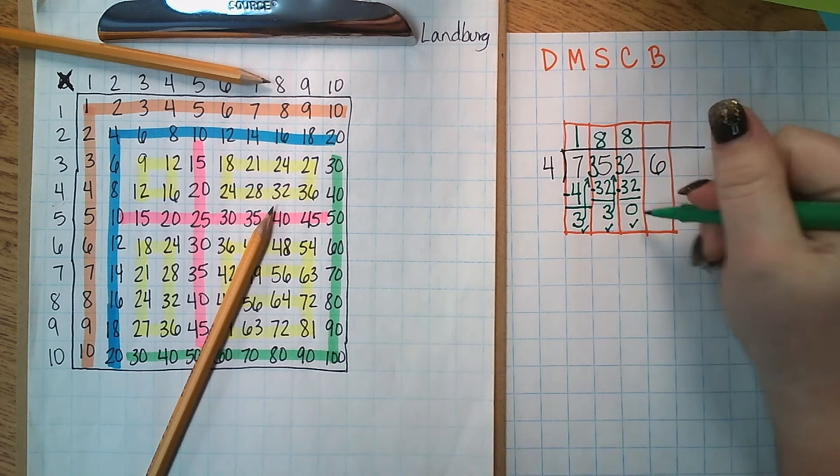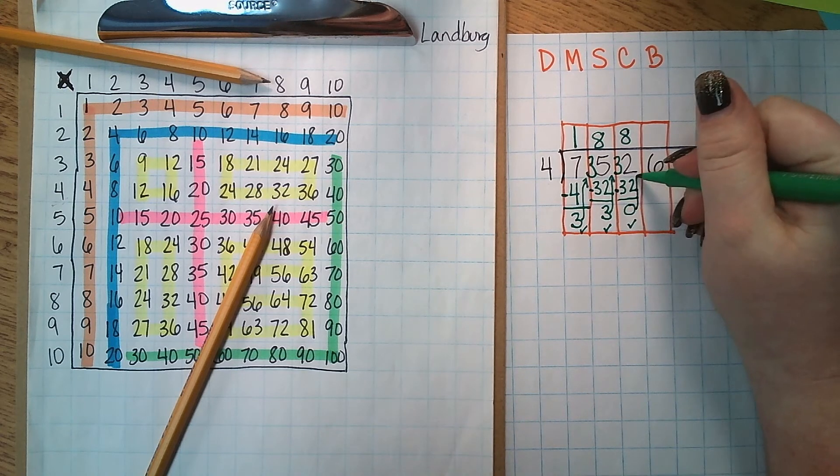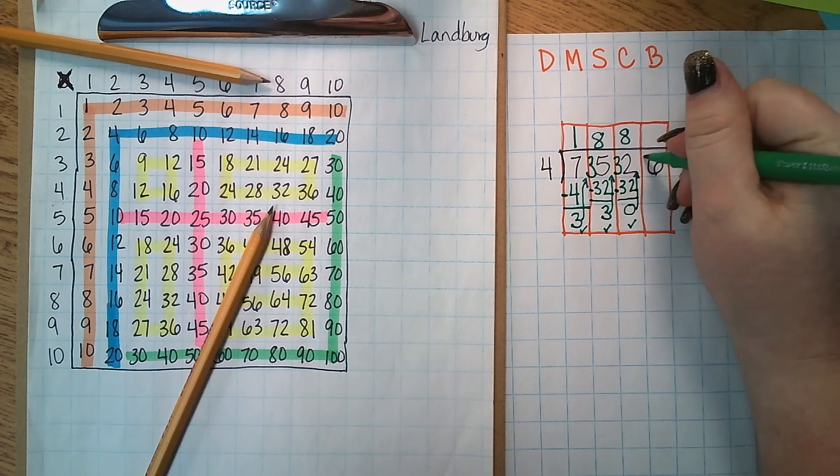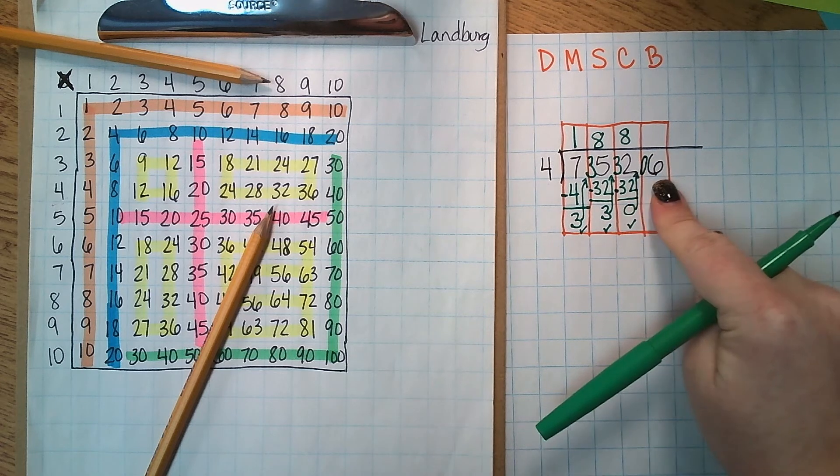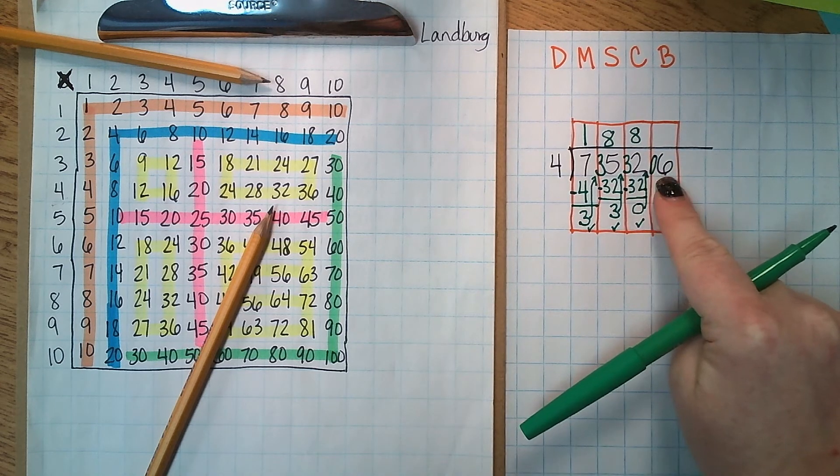Now I have to bring it up. Even though this is a 0 and we as adults know from long division that I don't technically have to bring that up, I still want them to do it to be in the practice of doing that and not forgetting a step. So now we have 6.